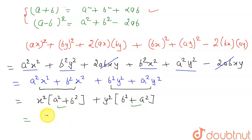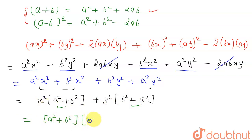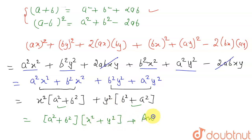Now, these two brackets (a squared plus b squared) are common. So taking (a squared plus b squared) common, we get (a squared plus b squared)(x squared plus y squared). So these two are the factors of the given equation. If you understood the solution, thank you.